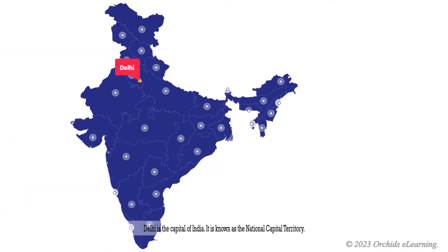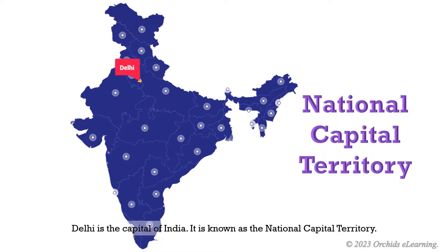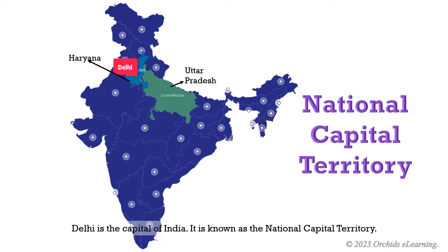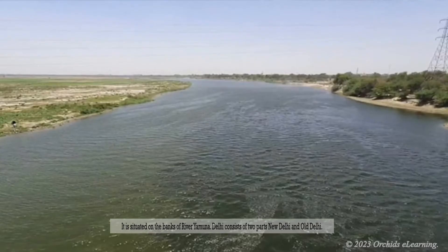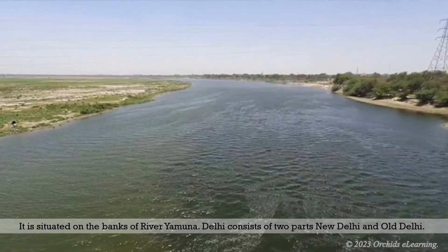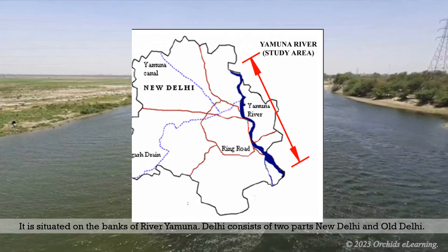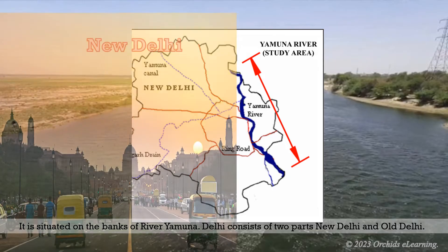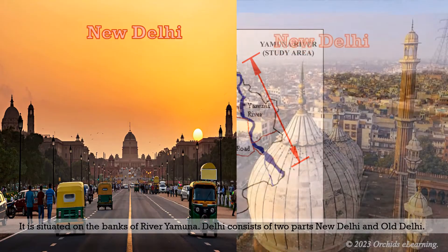Delhi is the capital of India. It is known as the National Capital Territory. It is bordered by Uttar Pradesh in the east and Haryana on the other three sides. It is situated on the banks of River Yamuna. Delhi consists of two parts: New Delhi and Old Delhi.